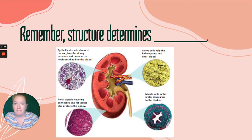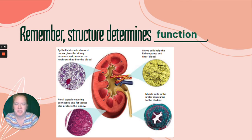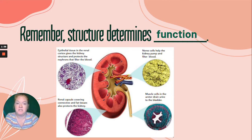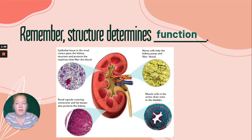Remember, structure determines function. In the kidney, we have many different types of cells and tissue, and they each have specific structures because they perform specific functions. Nerve cells, muscle cells, blood cells — they all have specific structures to serve their specific functions. Structure determines function.